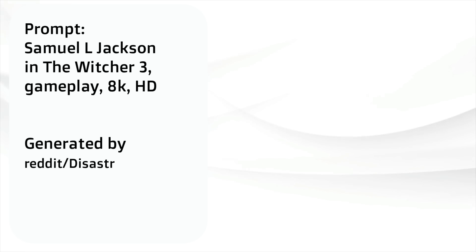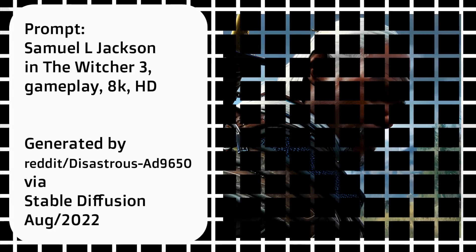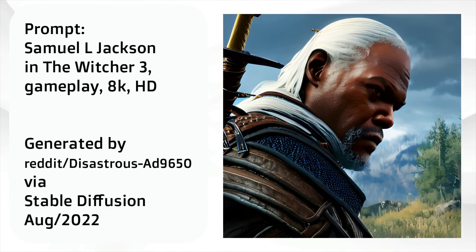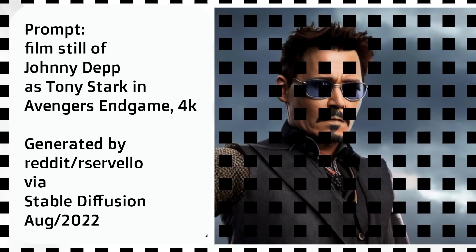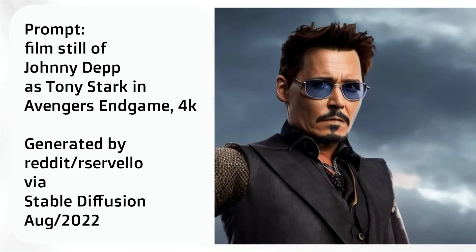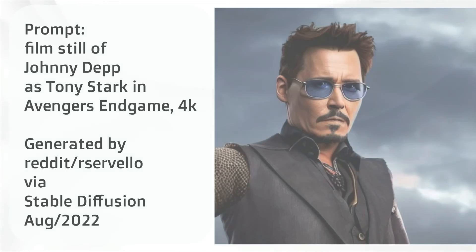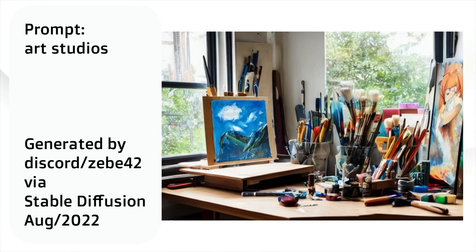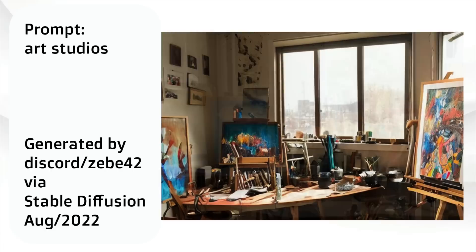Here's the prompt: 'Samuel L. Jackson in The Witcher 3, gameplay 8K HD.' Next: 'Film still of Johnny Depp as Tony Stark in Avengers Endgame 4K.' Then an Art Studios image — have a look at how beautiful this is. This art studio does not exist. None of these images existed until AI went and conceptualized them from scratch.